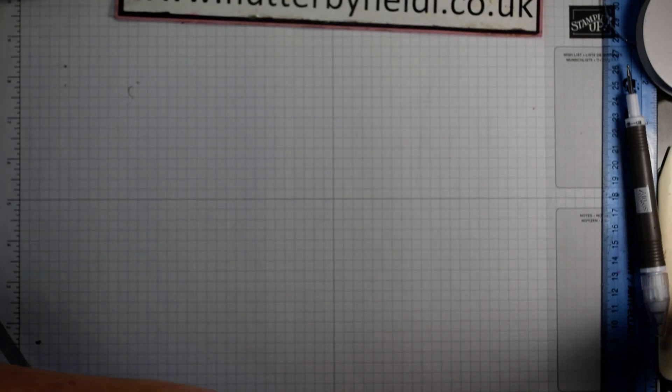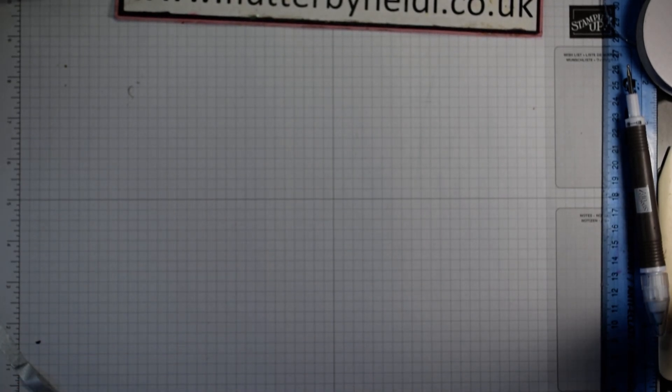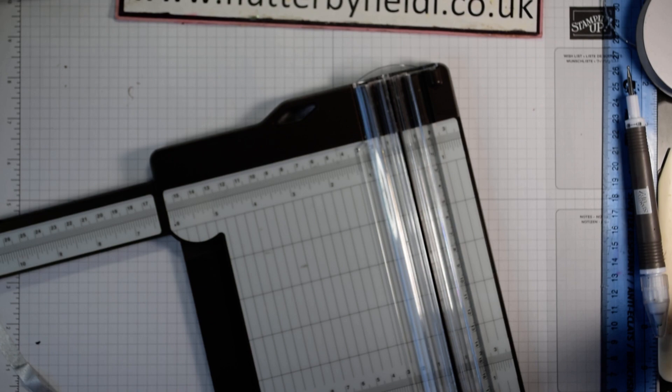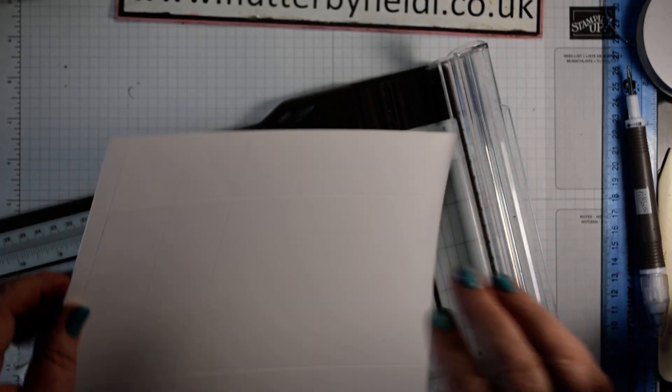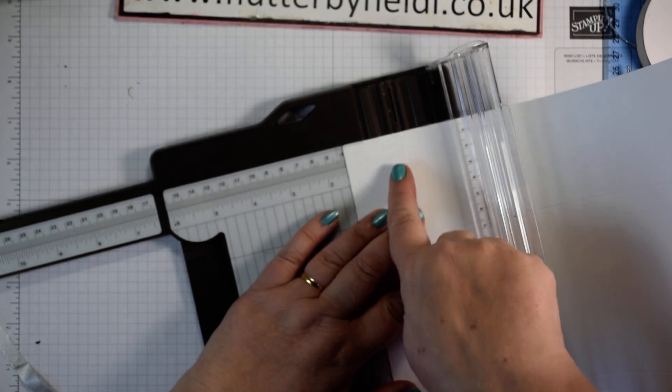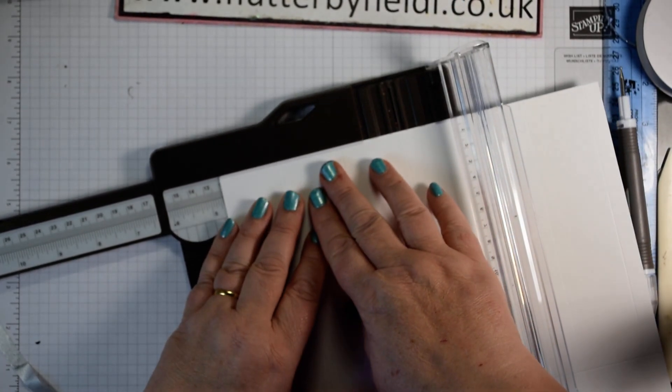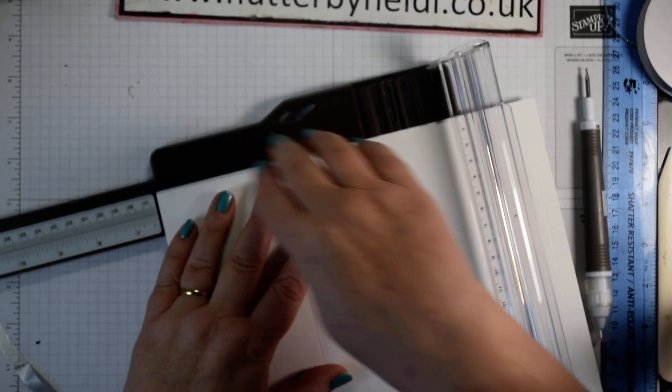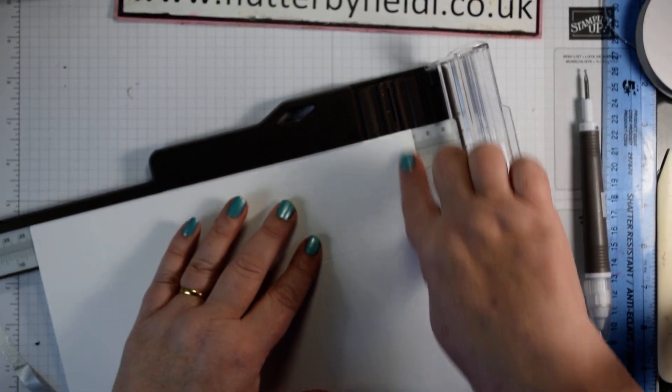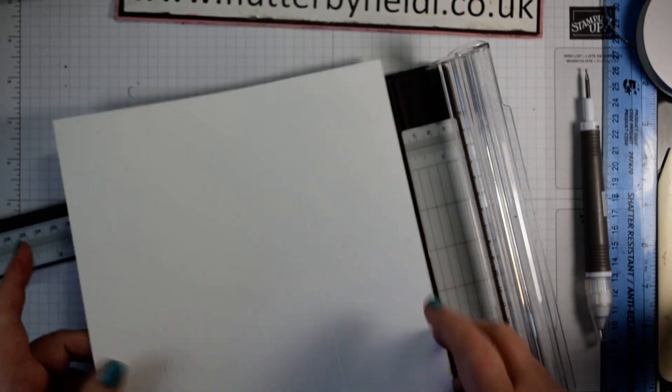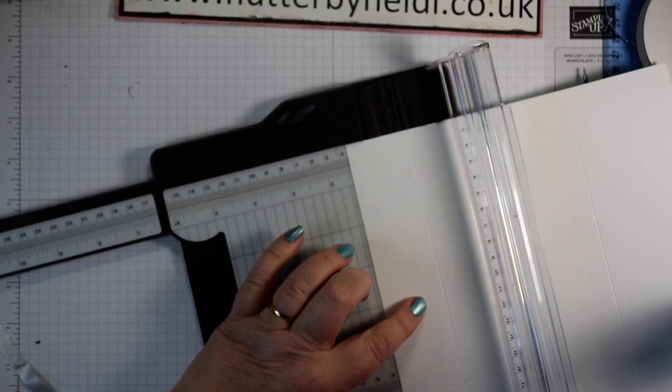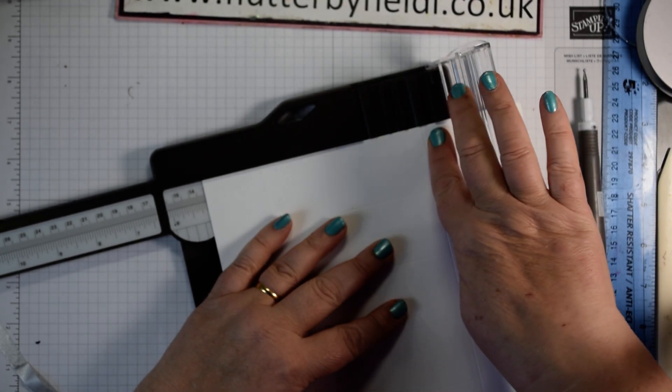So to start off with for our actual container, we're going to want a piece of cardstock that is 25 by 21 centimetres. On the 25 centimetre length, you are going to score every four centimetres. So at four, at eight, at 12, at 16, at 20 and at 24, leaving a centimetre at the end there. And then on the long edge at 21 centimetres, you're going to score at four centimetres and then again at 14 and a half centimetres.